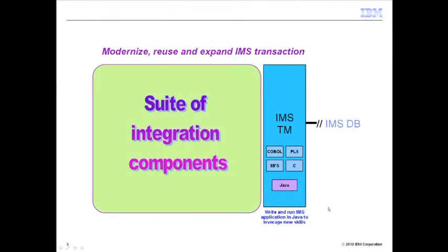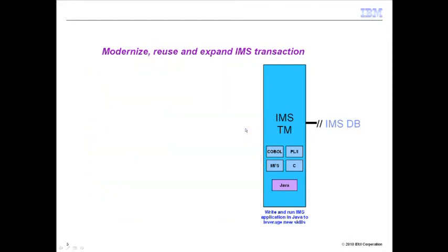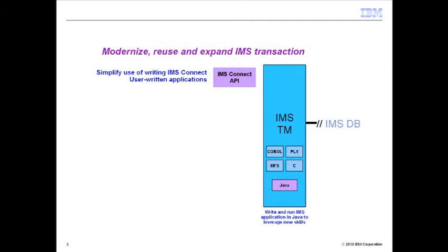IMS today provides a suite of integration components that is part of IMS that the customer can use. For accessing IMS TM, we provide five key solutions to allow our customers to access existing IMS transactions. These transactions could be COBOL, PL1, MFSC, or Java applications. One of the key things we try to achieve is we don't need the customer to rewrite the IMS application itself. What we provide is an enablement solution that customers can add on to their application infrastructure to allow them to easily access these IMS transactions.